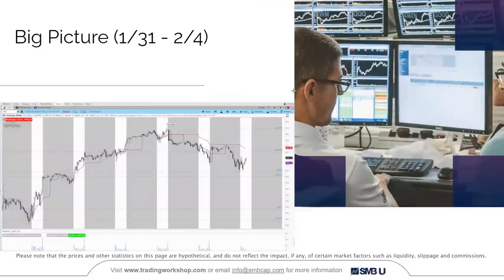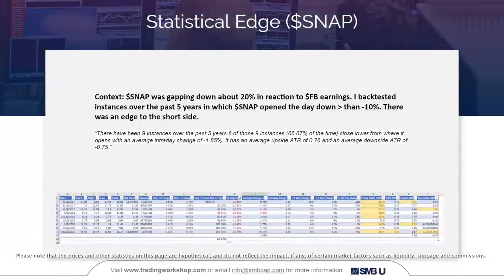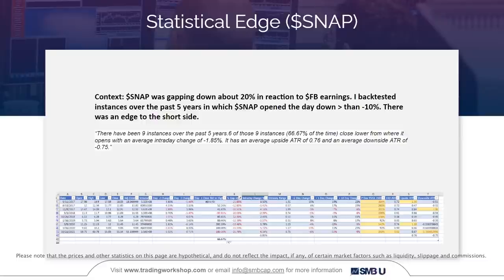This is the big picture. The price action seen this week included a few trending higher days going into the beginning of the week, closing higher three days, then stalling out and closing lower with a gap down on the last day. The context for the first backtest is Snap. Snap was gapping down about 20% in reaction to Facebook's earnings. Backtesting instances over the past five years in which Snap opened the day down more than negative 10% showed an edge to the short side. There were nine instances — six of those nine, so 66.67% of the time, closed lower from where it opens, with an average intraday change of negative 1.85%.